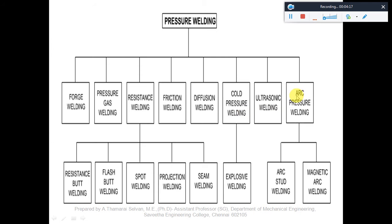In pressure welding, the metals do not melt. Instead, they are heated up to a red-hot, gel-like condition, and then pressure is applied so that the parts can be joined together.